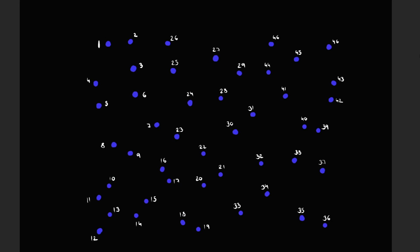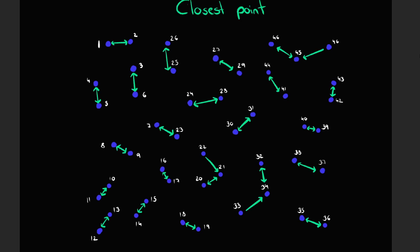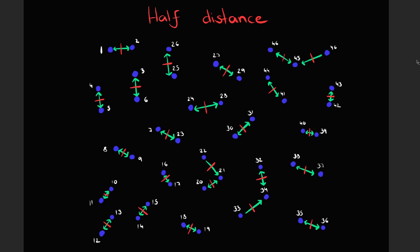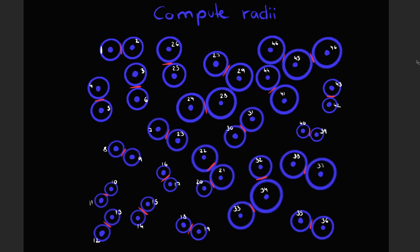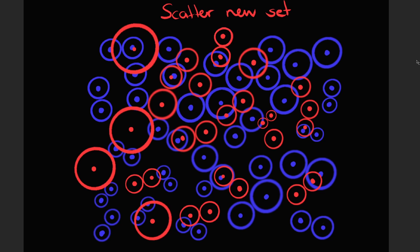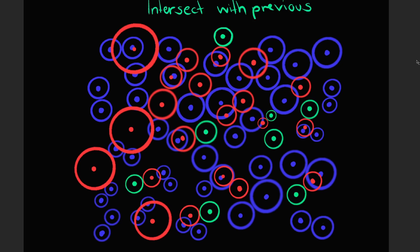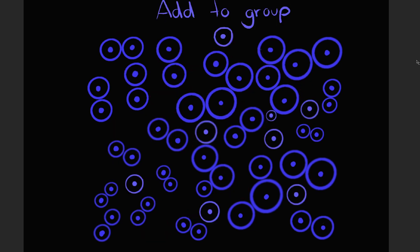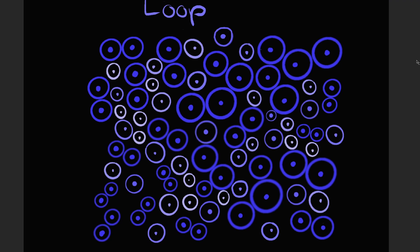Essentially what we will be doing is scattering a bunch of points in a way so that they are not intersecting, and then we're going to intersect those points with a new set of points. The first step is to make sure they are not intersecting with each other but have the biggest size possible. We compute the closest point, take that distance, and cut it in half so we know how big the radius can be without intersecting any other points. Then we scatter a new set of points with the same rules, intersect that with the previous iteration, and all the ones that are not intersecting we put into the same group — and we loop over that to populate the surface.